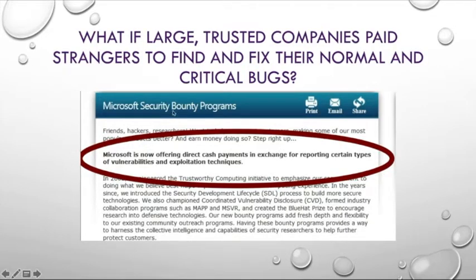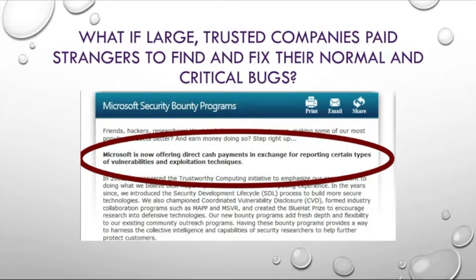Microsoft offers cash payments for reporting certain types of vulnerabilities. Even Facebook software engineer Matt Jones once said, 'We get hundreds of reports every day and we have paid out over 1 million dollars to hundreds of reporters.' So instead of finding and fixing bugs through a stranger, it's better to use a tool like automatic program repair, which would reduce repair costs extensively.